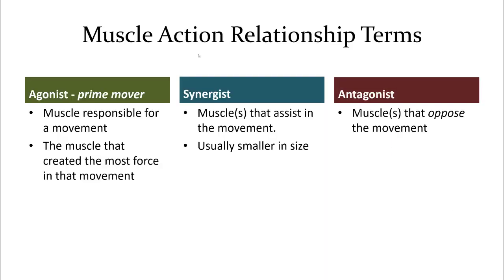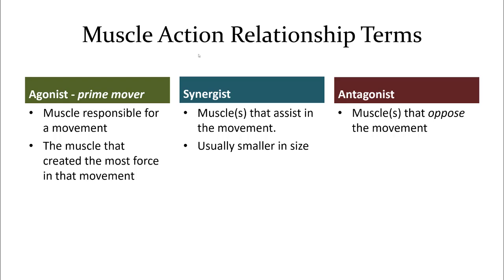Some terminology helps you understand relationships between muscles with similar functions. The prime mover is the main muscle doing an action, which is usually the biggest muscle. A synergist is a muscle that assists with the movement. A muscle that does the opposite motion is the antagonist.